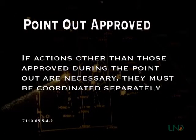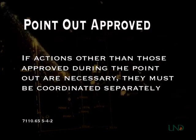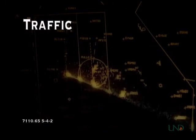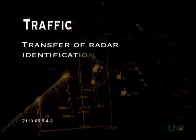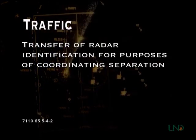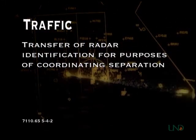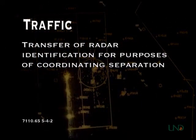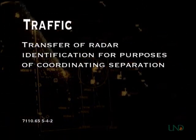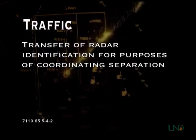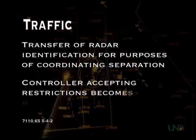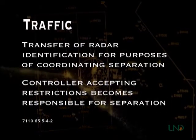Point out approved is not approval to use the receiving controller's airspace for any purpose other than what was coordinated. Traffic is a term used to transfer radar identification of an aircraft for the purpose of coordinating separation. Traffic is normally issued in response to a handoff or point out, in anticipation of a handoff or point out, or in conjunction with a request for control of an aircraft. If traffic is issued in order to coordinate separation, the controller accepting the restrictions becomes responsible for maintaining separation between the aircraft involved.